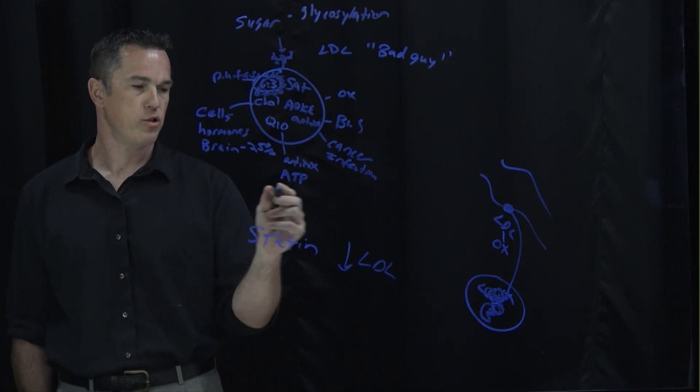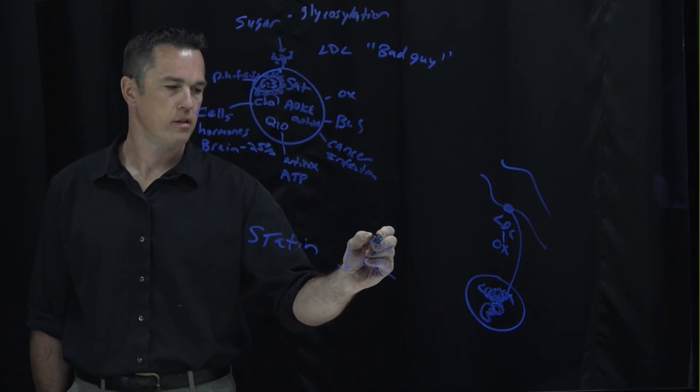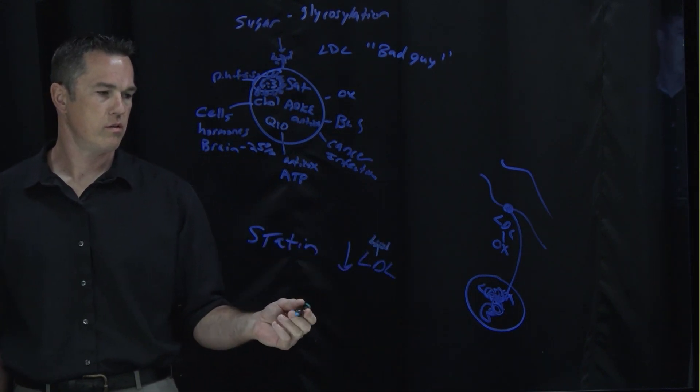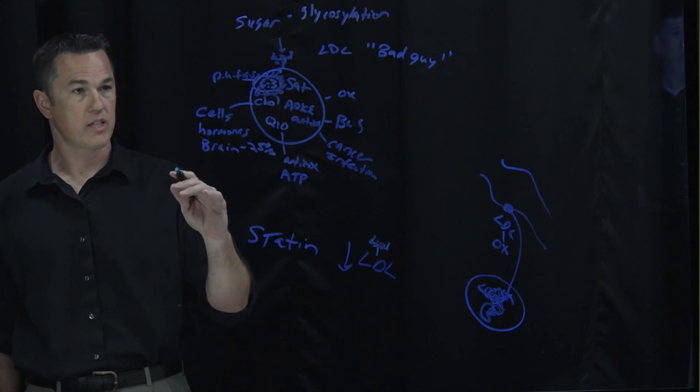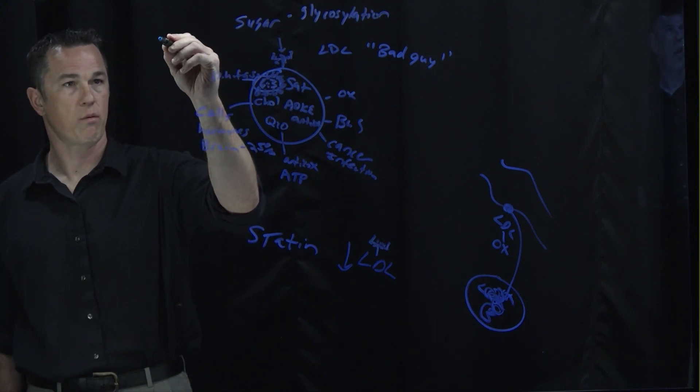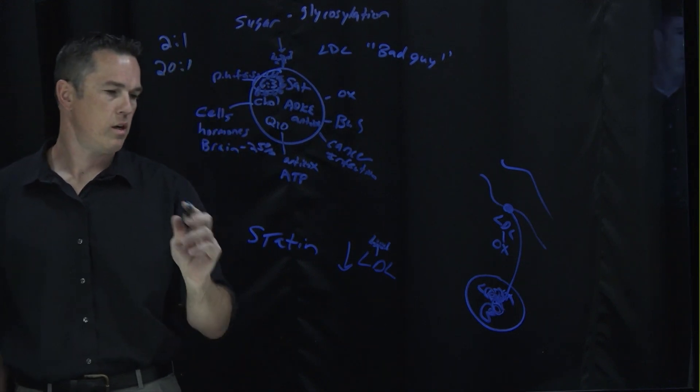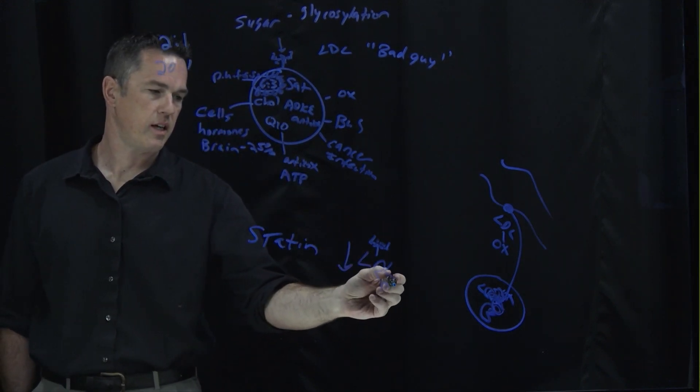However, if you still eat sugar, you still have an abnormal omega-6 to 3 ratio—which if you've seen my previous lectures, in nature we're supposed to have a ratio of about 2:1, but the average American is sitting at 20:1—then you're still going to have oxidized LDL.